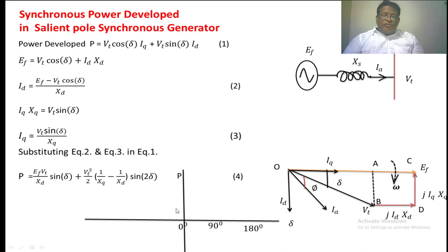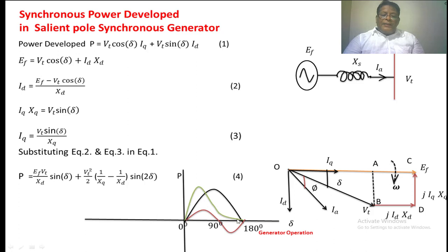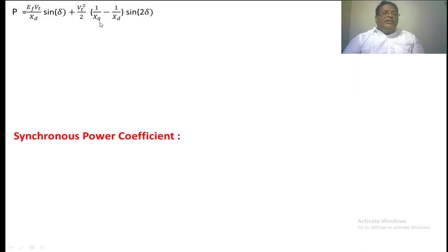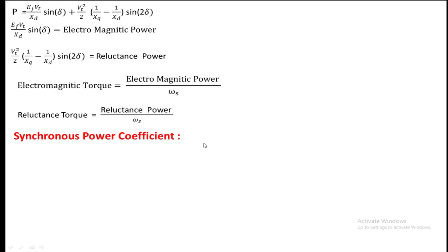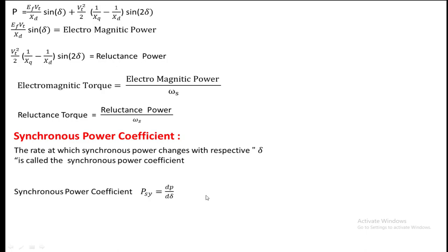On the x-axis we take delta from 0, 90, and 180. The first component follows a sin(delta) profile, while the second component follows a sin(2·delta) profile, completing one cycle within 180 degrees. The phasor sum of these two components gives the total power developed in the salient pole synchronous generator. The same approach applies to the synchronous motor, giving a curve on the negative power axis. The electromagnetic torque equals this power component divided by ωs, and the reluctance torque is the second component divided by ωs. The synchronous power coefficient is the rate of change of synchronous power with respect to delta, i.e., dP/dδ.